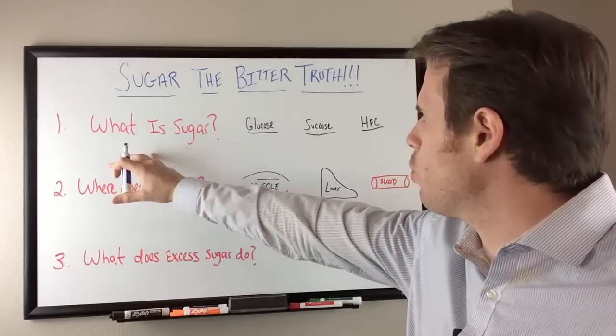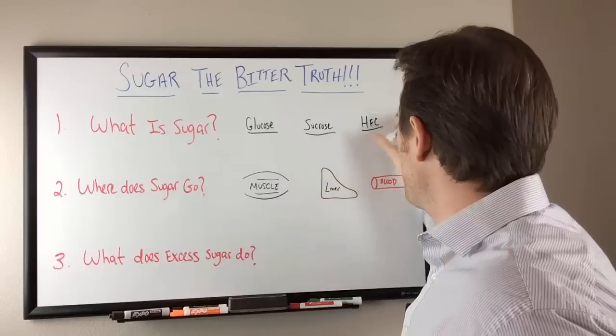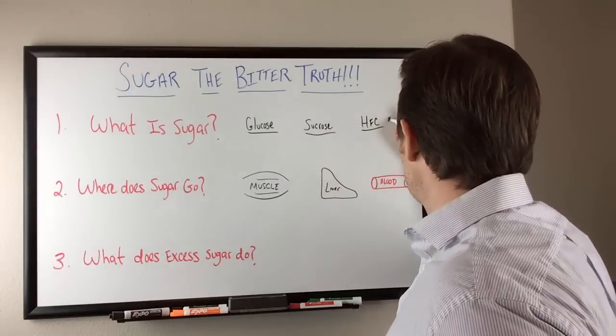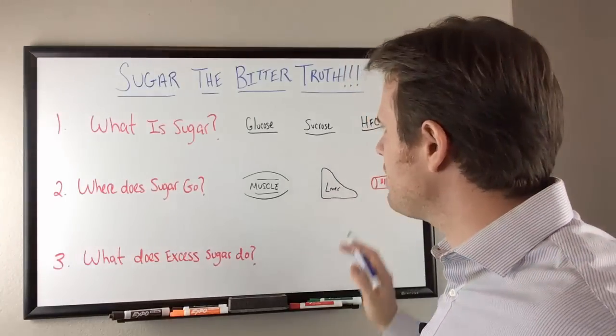So first, what is sugar? Well, we have three main types of sugar. We have glucose, we have sucrose, and then we have the ever most common in today's junk food era, high fructose corn syrup. Alright, so let's break these down.